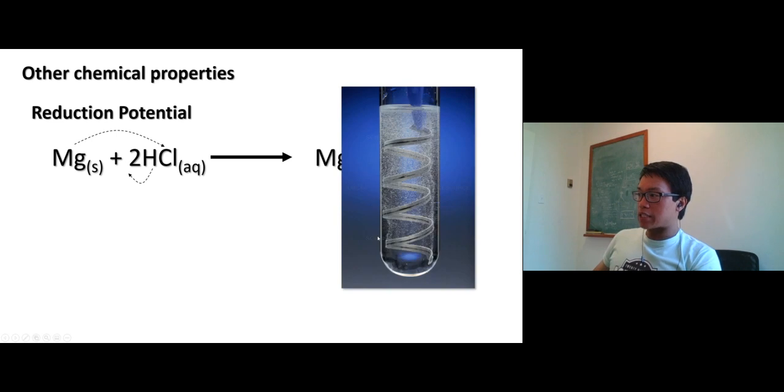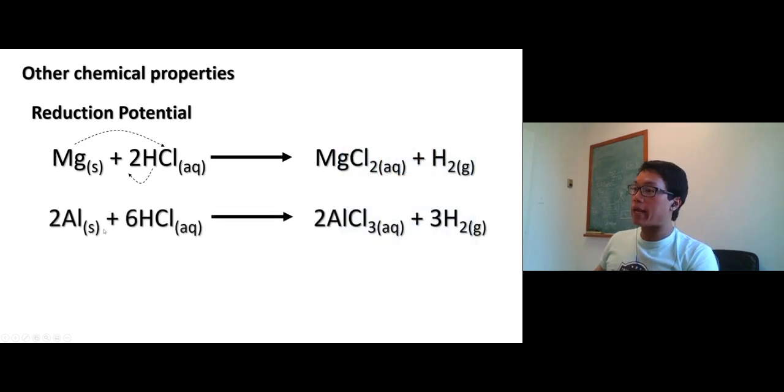So you can see, look at this experiment. So we have dumped the strip, magnesium strip, into the solution of hydrochloric acid and you see all the bubbles right here, little bubbles. Those are hydrogen gas. Aluminum can do exactly the same thing. Now you get aluminum chloride, hydrogen gas coming out. So these are chemical properties of magnesium and aluminum.